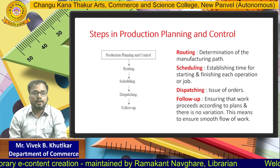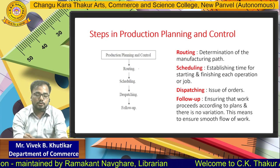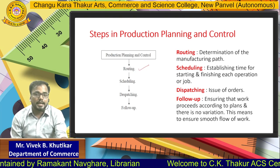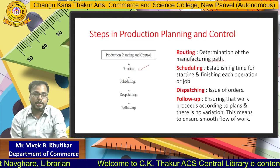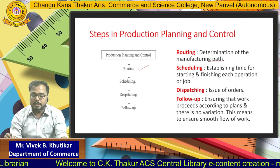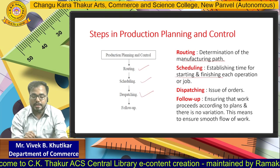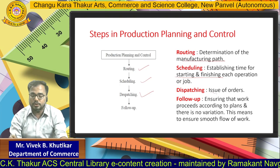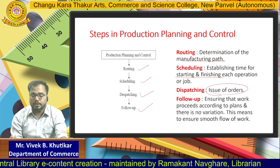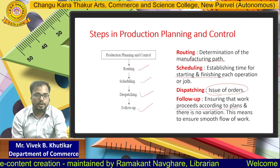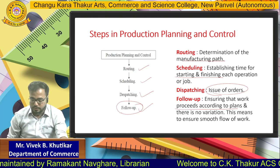Next topic is Steps in Production Planning and Control. Production Planning and Control is broadly divided into 4 steps. First is Routing, which is deciding the route of the production or manufacturing path. Next is Scheduling, which is fixing or establishing the timetable, start time and finishing time of the production process. Next is Dispatching, which is the issuance of orders. And the last one is Follow-up, which is ensuring all processes go accordingly to the plan — checking or verifying that the process is going as per our planning.